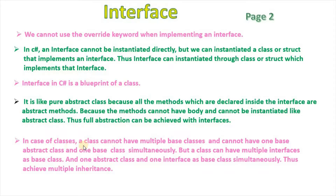In the case of classes, a class cannot have multiple base classes, and cannot have one base abstract class and one base class simultaneously. But a class can have multiple interfaces as base, and one abstract class and one interface as base class simultaneously — thus achieving multiple inheritance.